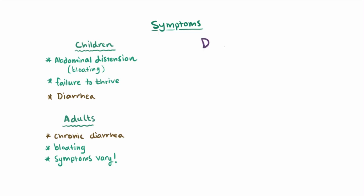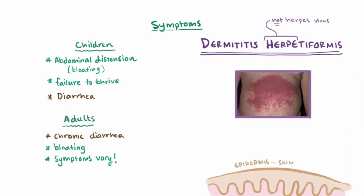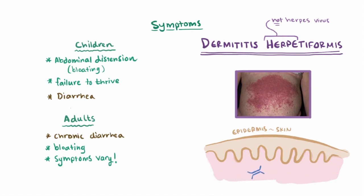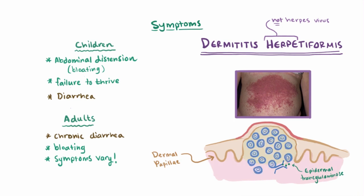Also, patients can frequently have dermatitis herpetiformis as a complication, which actually has nothing to do with the herpesvirus. What it is is a bumpy skin rash that pops up from circulating IgA antibodies in the blood, where they mistakenly bind to the transglutaminase in the dermal papillae of the epidermis. Once they've bound, neutrophils swing by and start up an inflammatory reaction that's noticed on the skin as this rash.